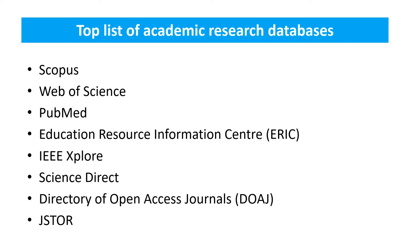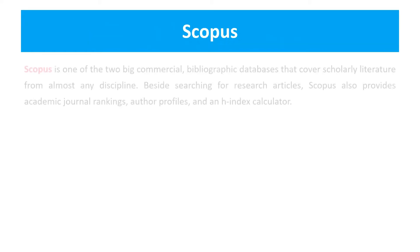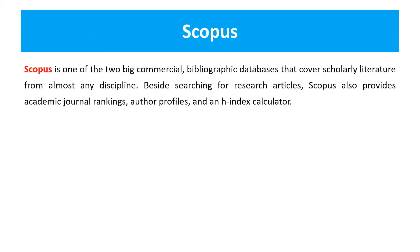So what is Scopus? Scopus is one of the two big commercial bibliographic databases that cover scholarly literature from almost any discipline. Besides searching for research articles, Scopus also provides academic journal rankings, author profiles, and an H-index calculator.